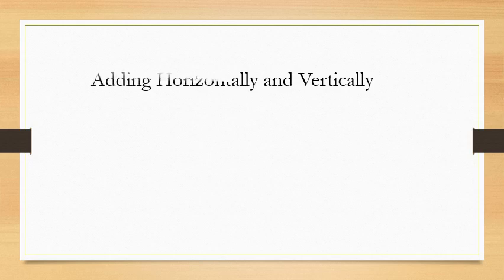Next, our next topic is adding horizontally and vertically. You can find the sum by writing the numbers either side by side, which is called horizontally, or one below the other, which is called vertically.